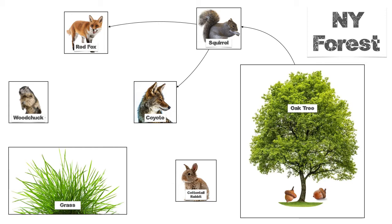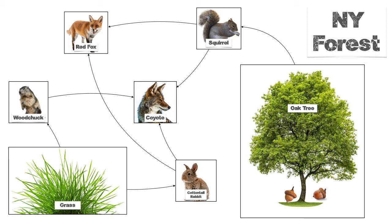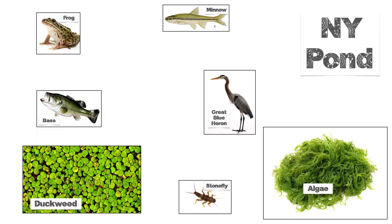Now we're no longer really looking at a single chain — we're starting to create what we call a web. So I can now look at the grass. The woodchuck eats the grass. The woodchuck is also eaten by the coyote. I can then look at the grass being eaten by the rabbit, and the rabbit's energy might go to the coyote, or it might actually go to the red fox. So I get this set of connections that occur in this particular little ecosystem.